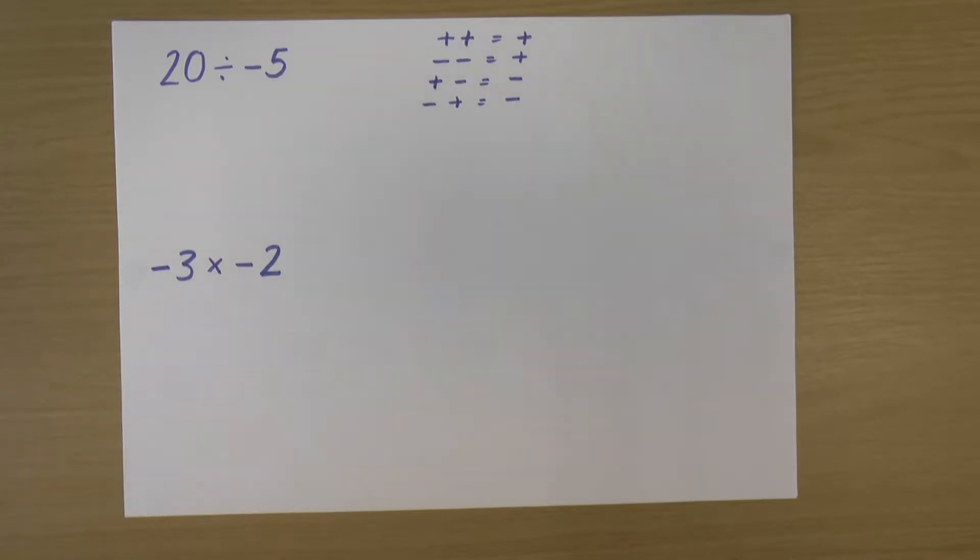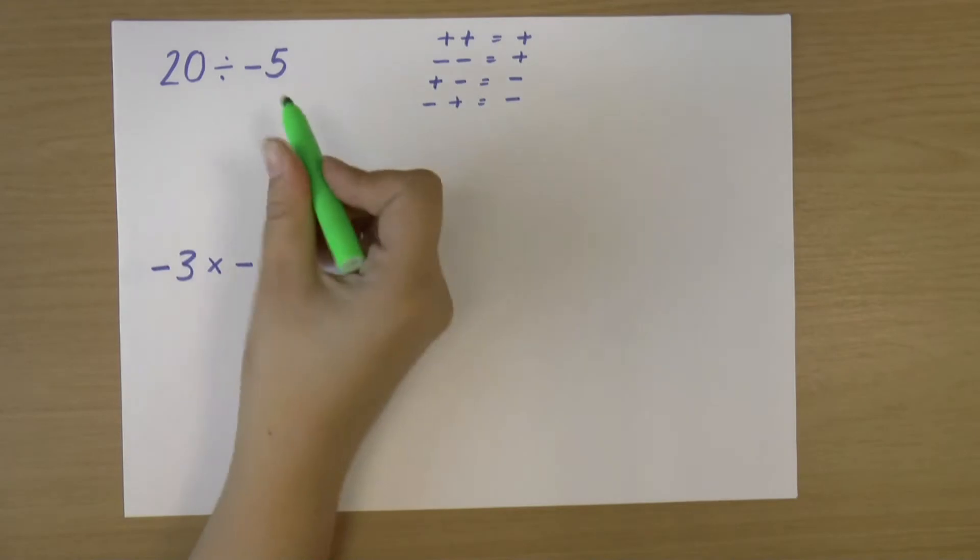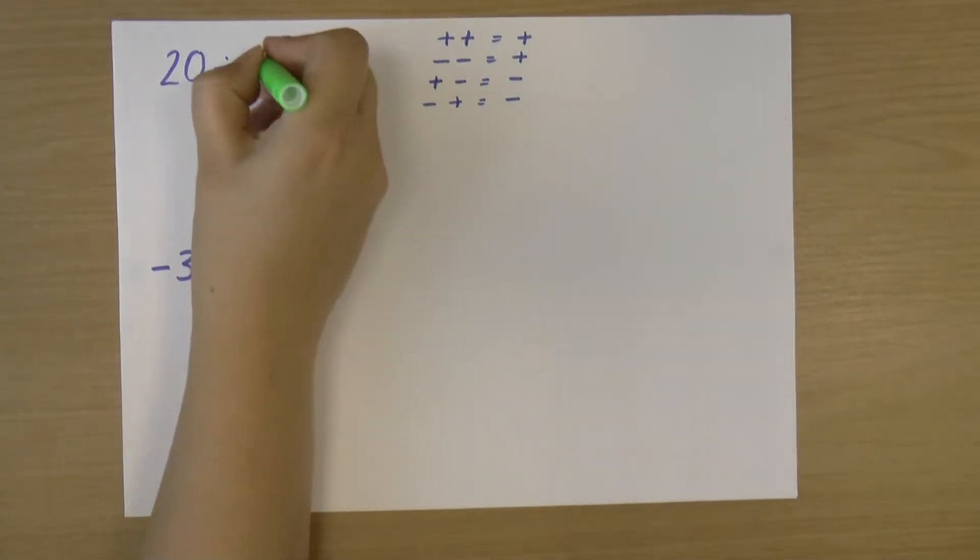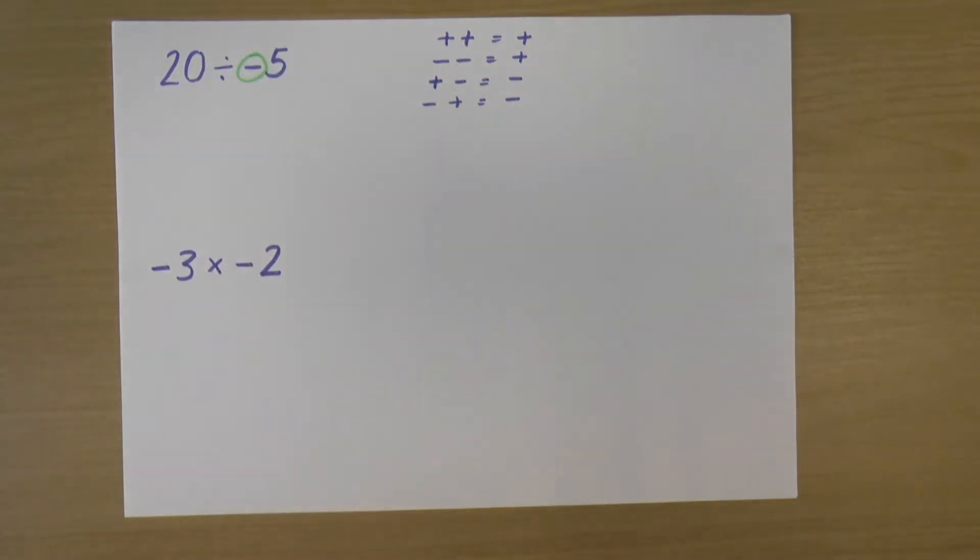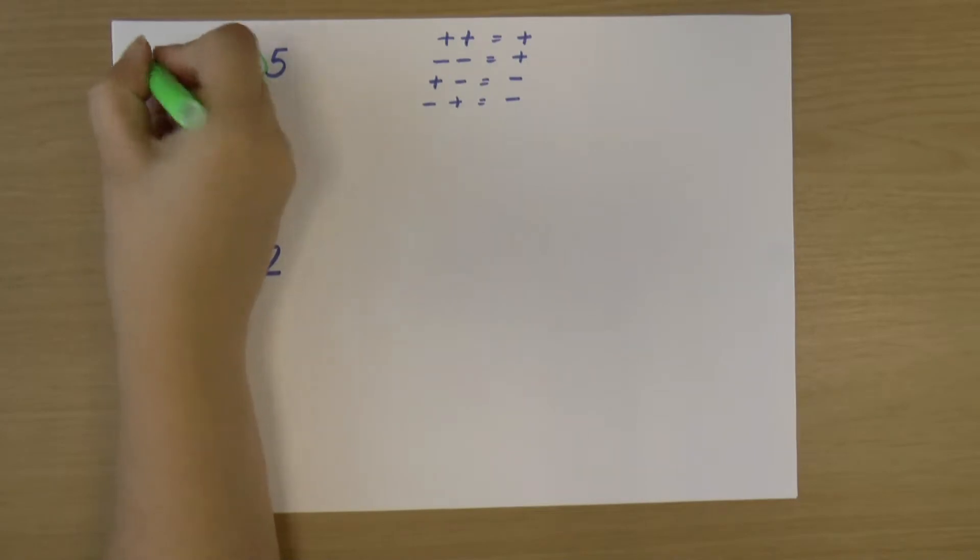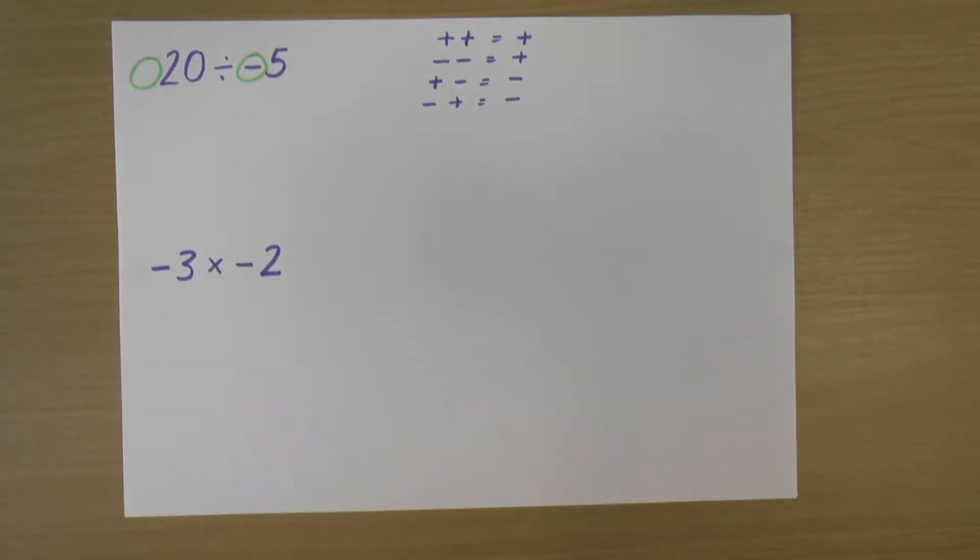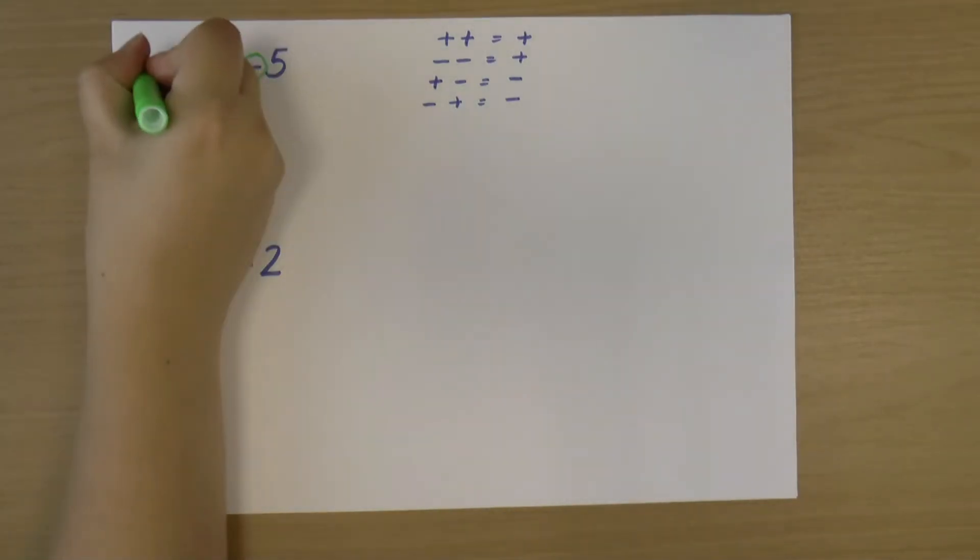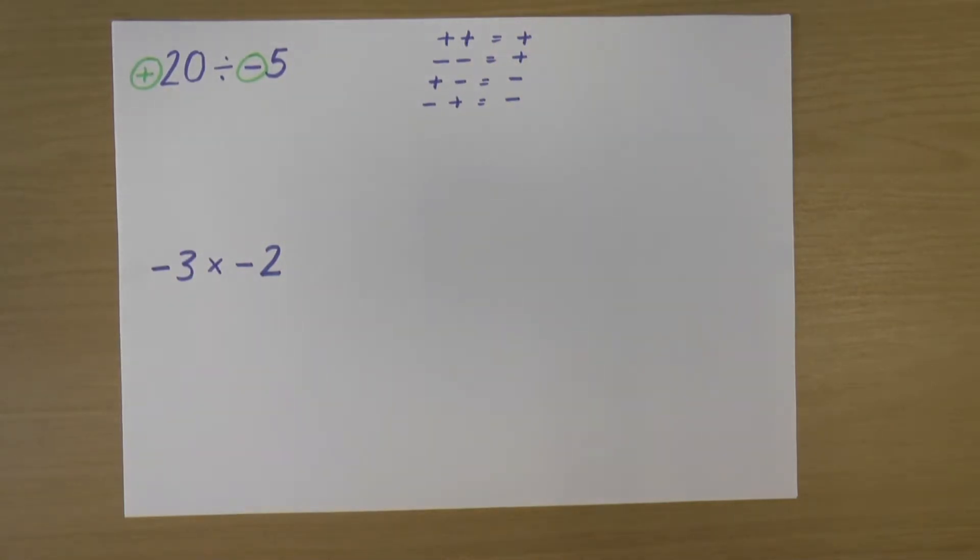So this time I'm going to look at the symbols that are in front of the numbers to find out which of these rules to use. So what I mean by that is you can clearly see for minus five, my symbol is a negative symbol. It's a minus symbol. Now you may see that 20 doesn't actually have a symbol. When we don't have a minus in front of a number, that means it's a positive number. So I can just pop a positive in there.